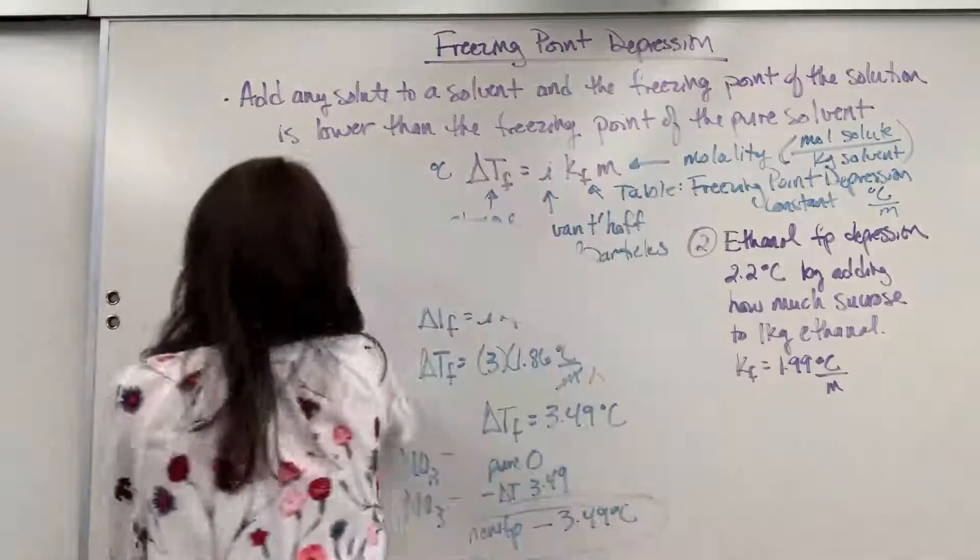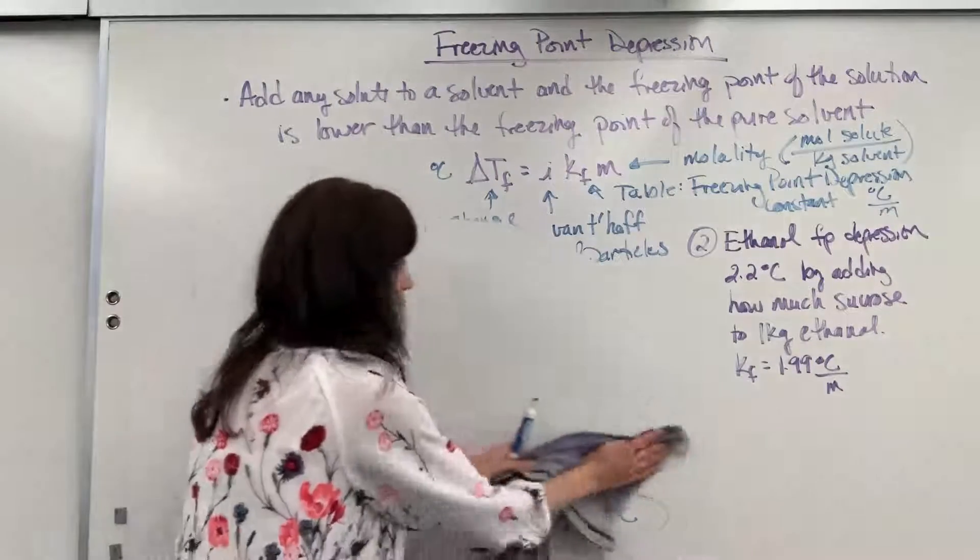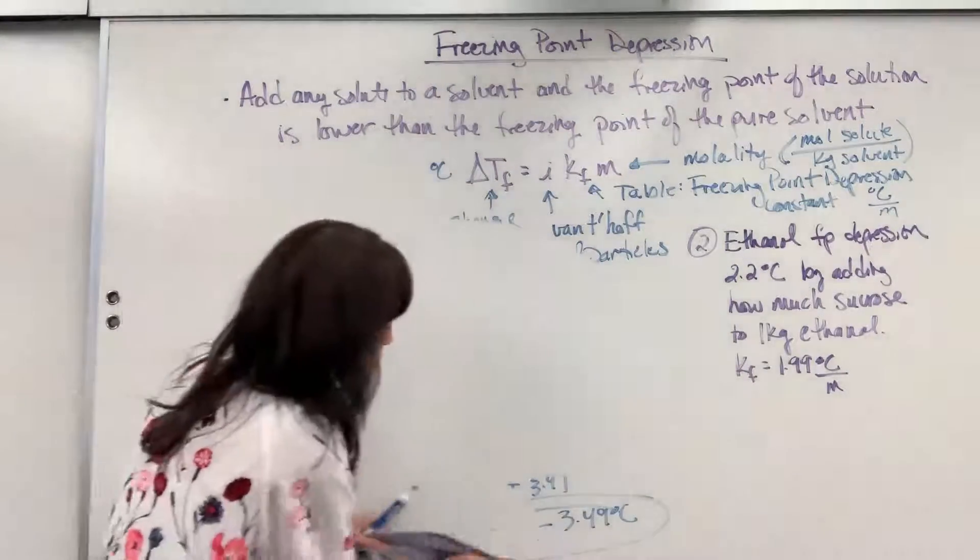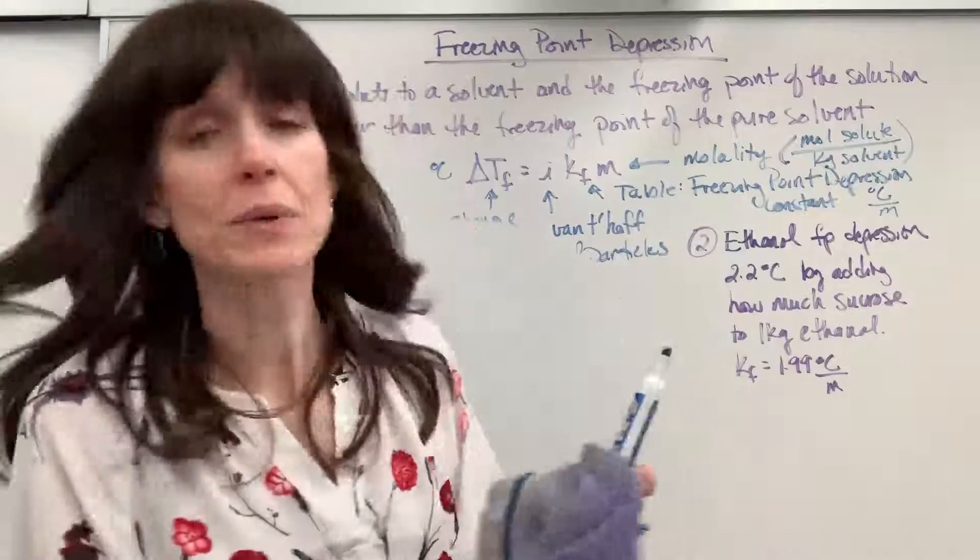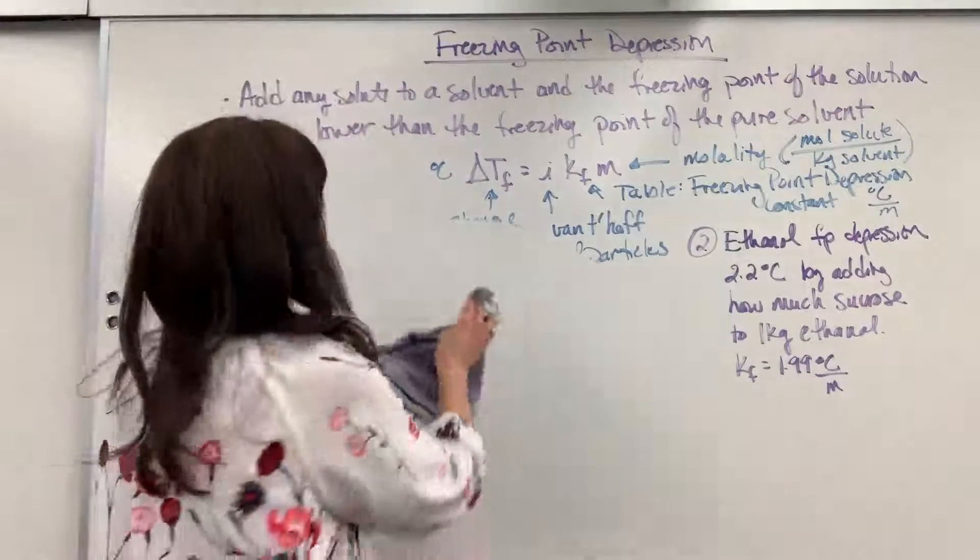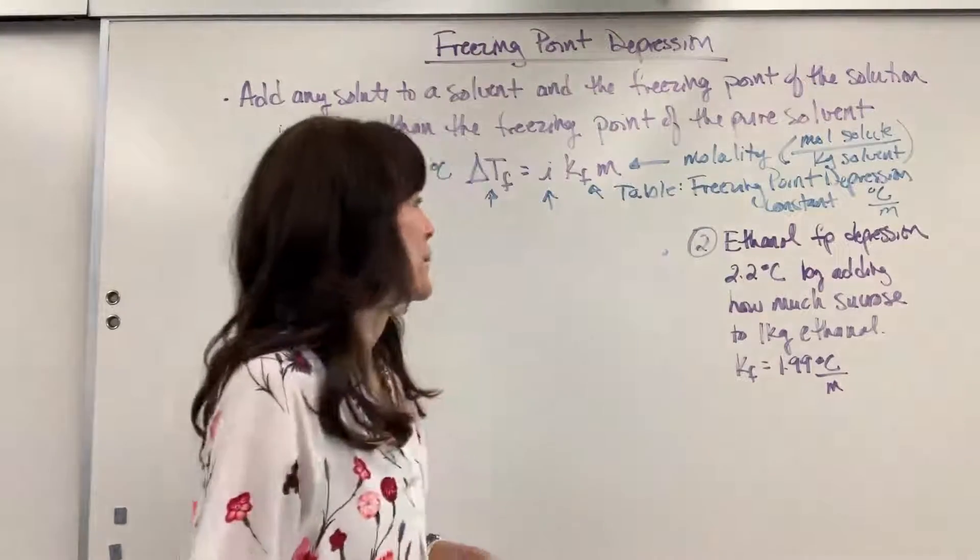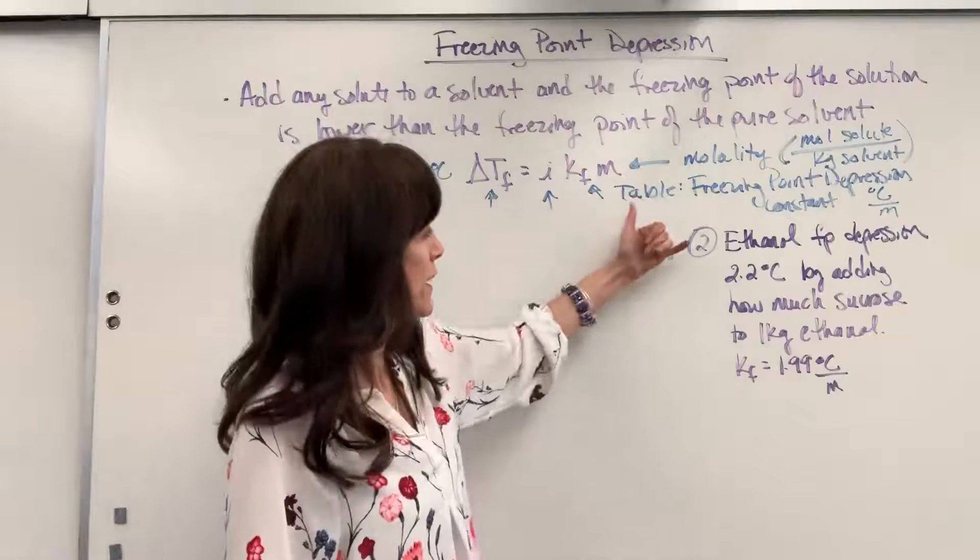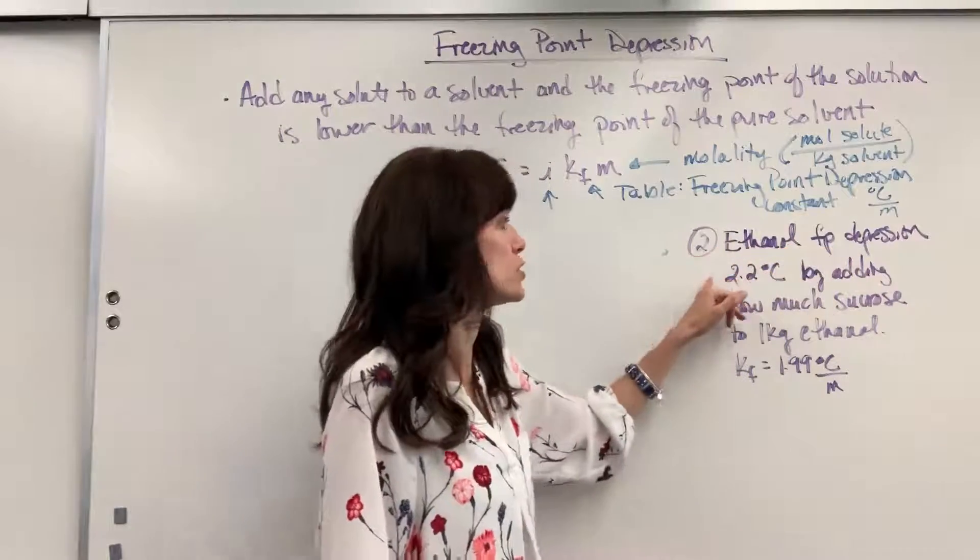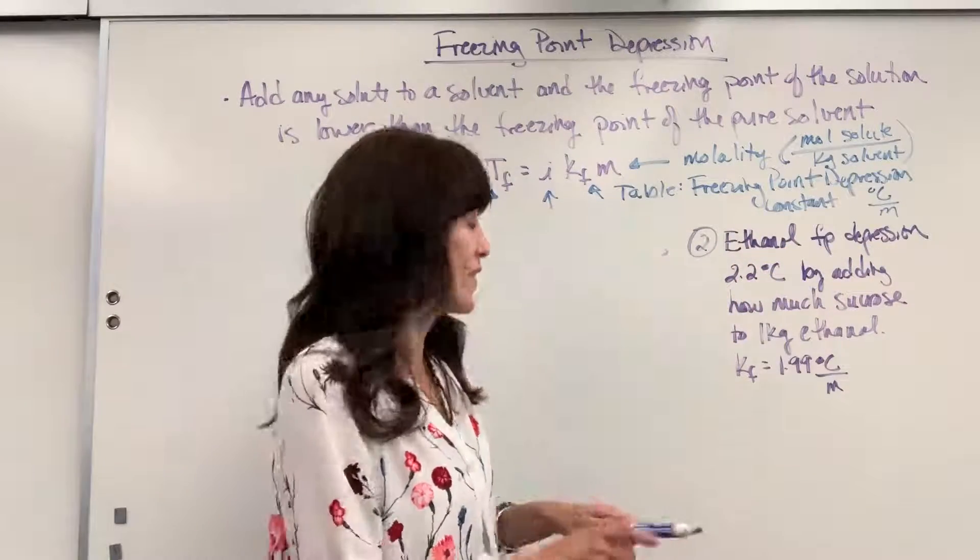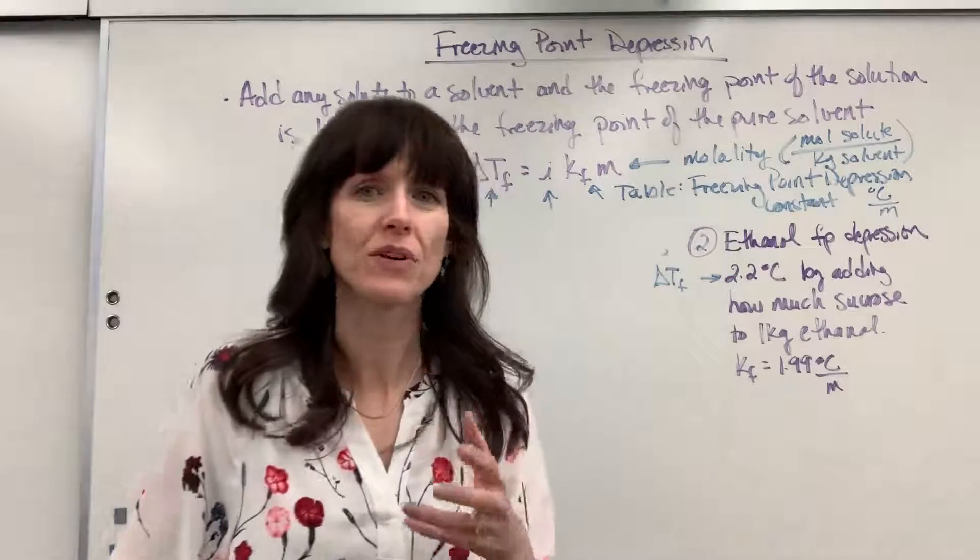Let's go ahead and do a little bit harder problem. We are going to take ethanol and dissolve some sucrose in it. Kind of weird. Why would we ever dissolve sucrose in ethanol? Only because we're using an example. So notice how this is worded. It says we want to know the ethanol freezing point depression. So sorry. It's telling us that the ethanol freezing point depression is 2.2 degrees C. So that right there, they're actually giving us the change in temperature.